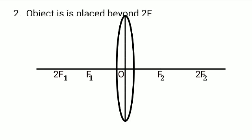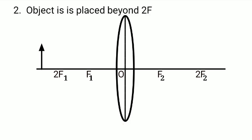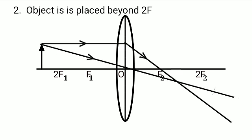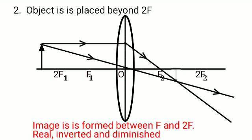Number two, when object is placed beyond 2F, the rays after refraction will meet at a point in between F and twice F. Therefore, the image is formed at that very point only. It is real, inverted and diminished.